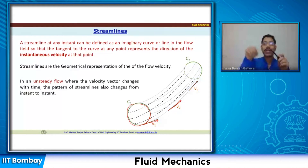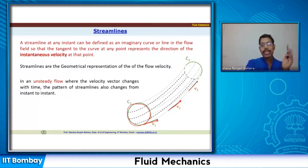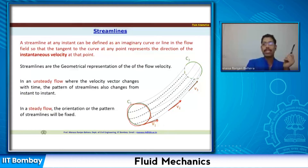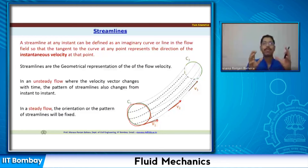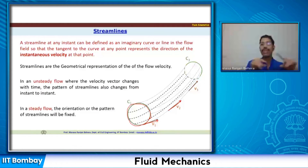Since there is no cross flow across a streamline, one streamline cannot cross another. Streamlines cannot cross each other. In a steady flow, the orientation or pattern of streamlines is fixed, because the flow field is not changing in time. Since velocities are not changing, the streamline positions do not change.